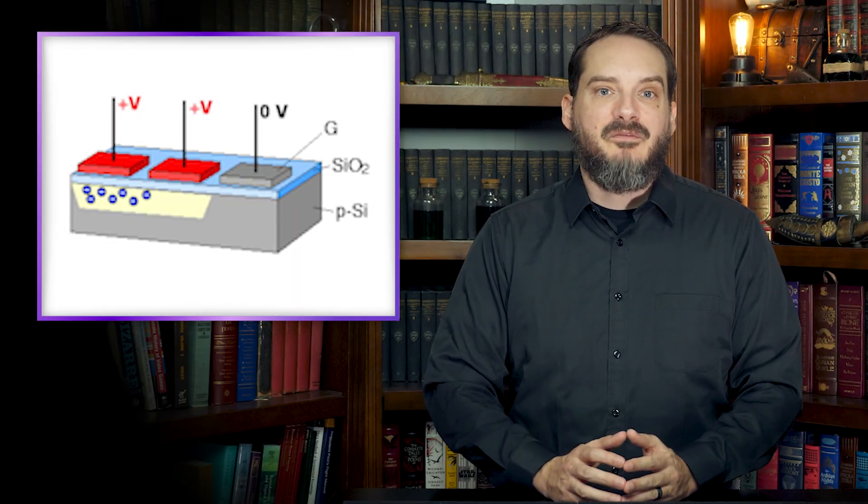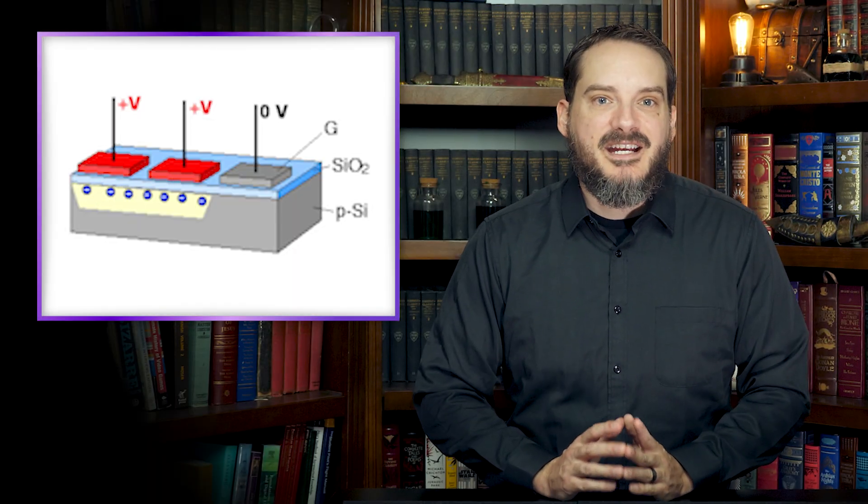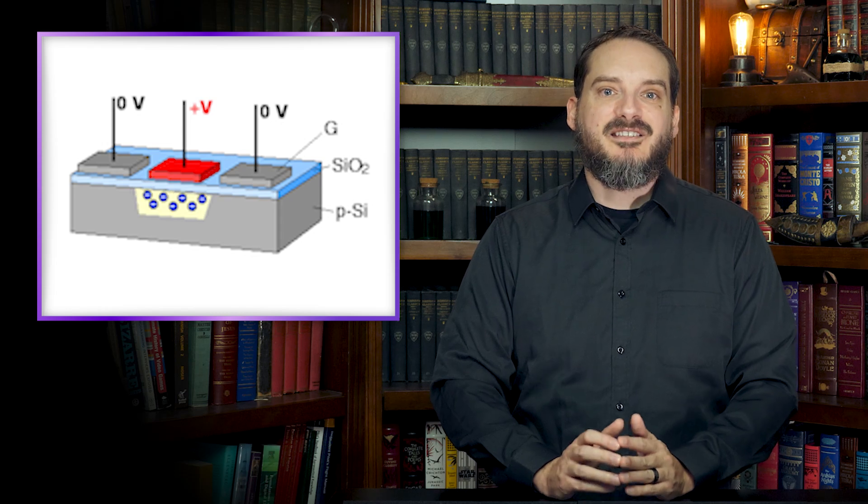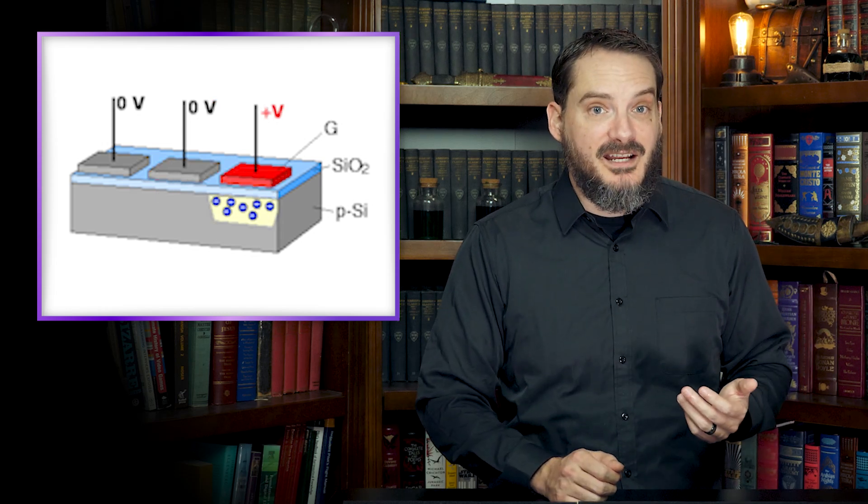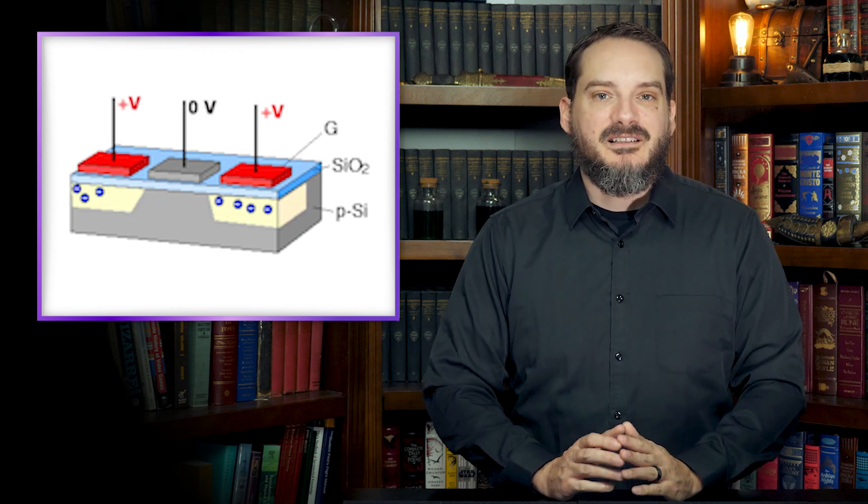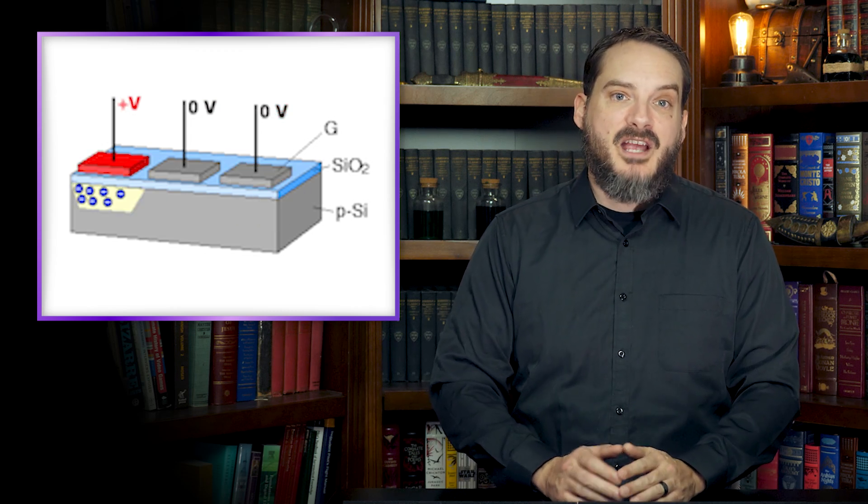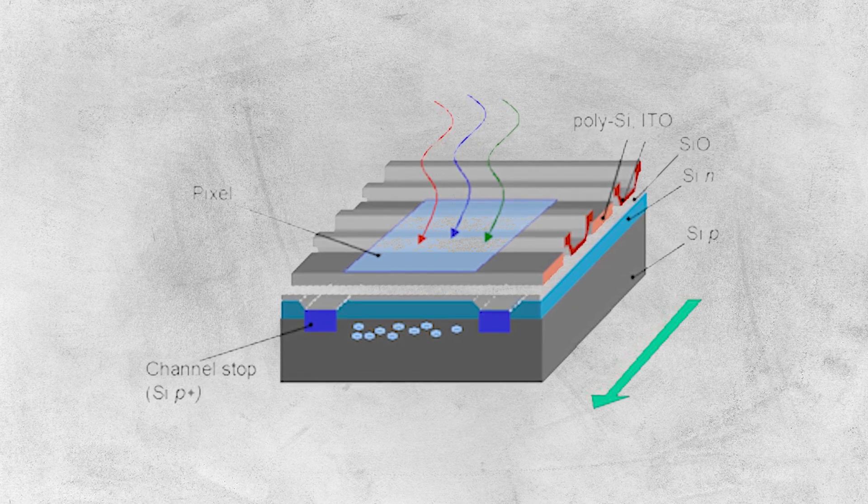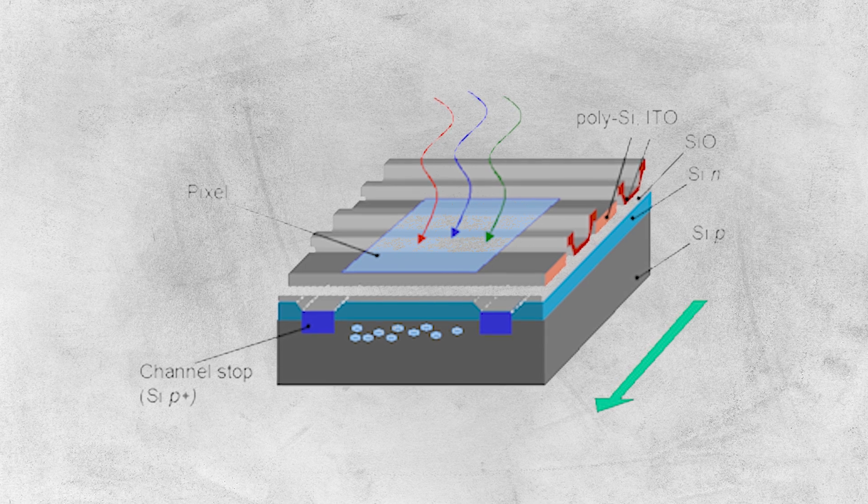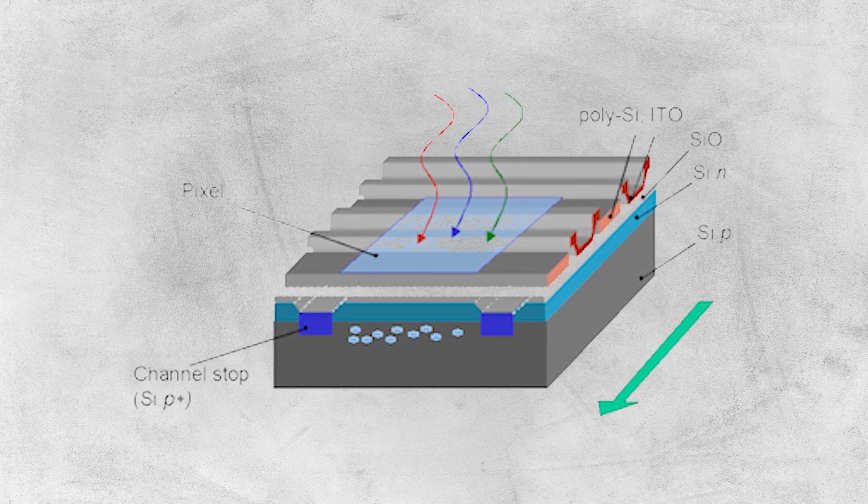By building a rectangular array of MOS capacitors, they were able to create a sensor that could digitally capture and store images directly without a photographic or television intermediary. CCDs worked by converting light energy into electric charge. When an image is projected onto a CCD array, each individual MOS capacitor accumulates and stores more or less charge based on the intensity of the light that falls on it.